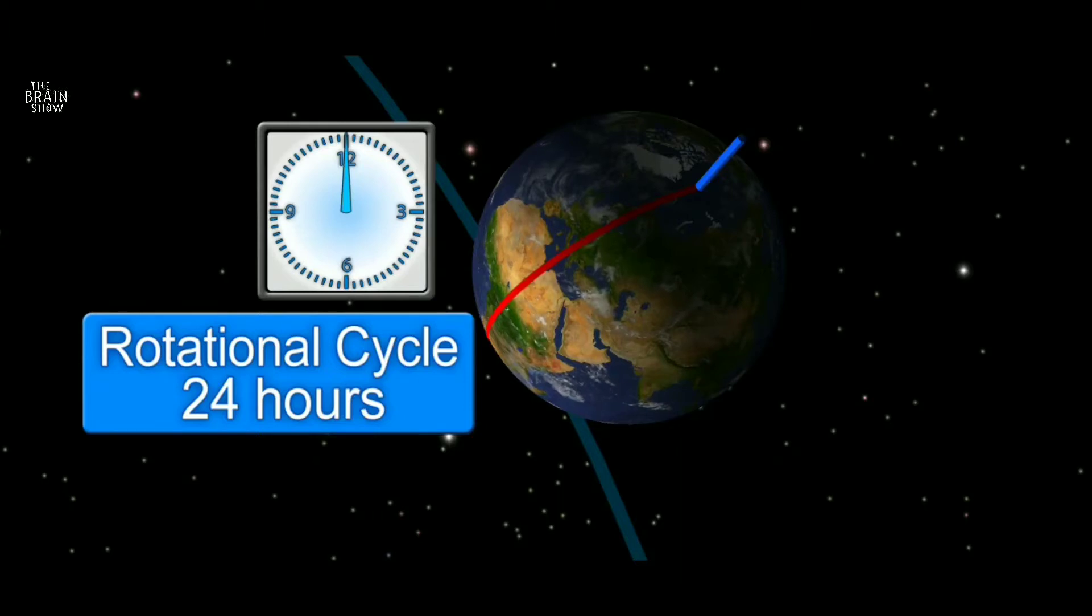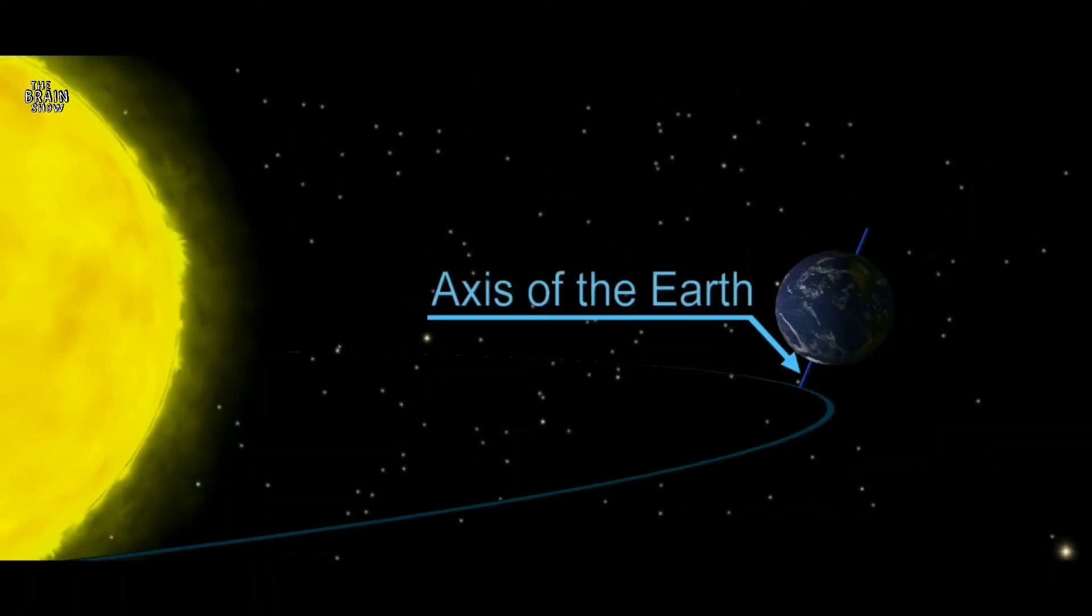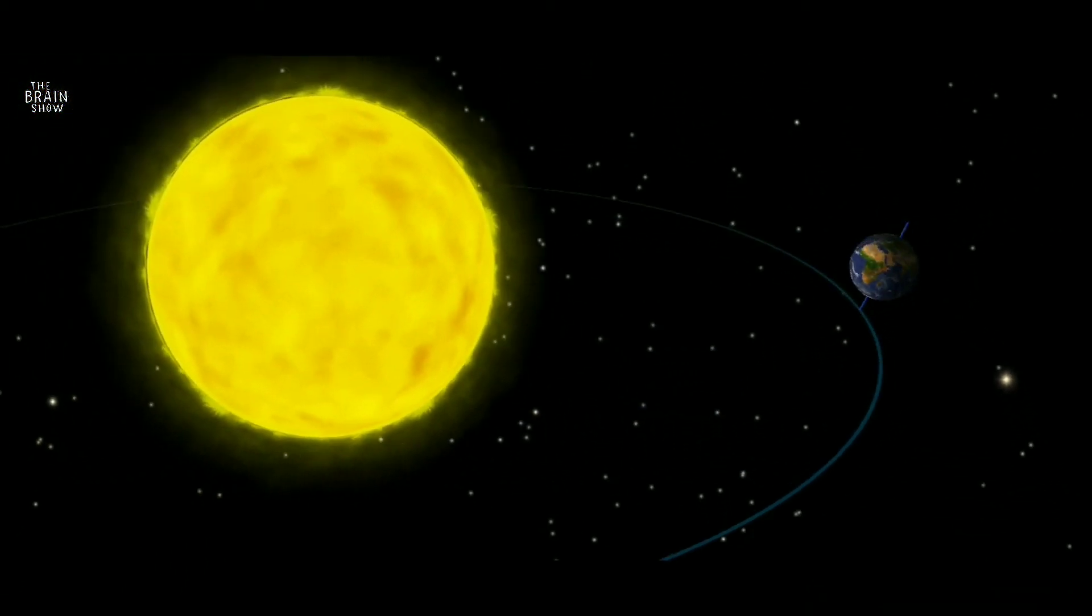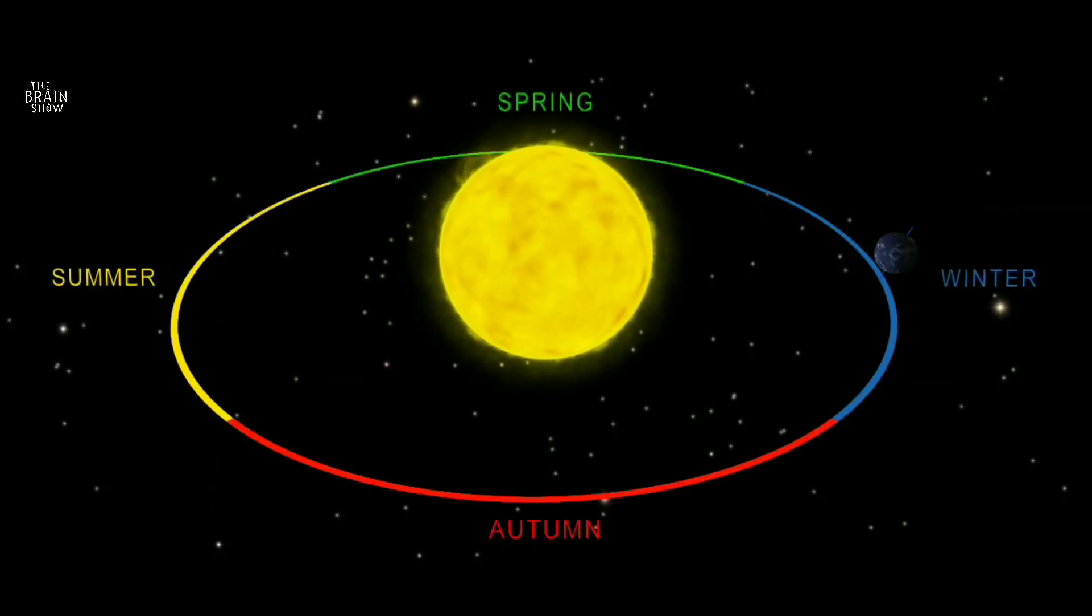Now what causes the Earth's seasons? The Earth's seasons are caused by the tilt of the Earth's axis which is 23.5 degrees. The Earth revolves around the Sun in 365 days.